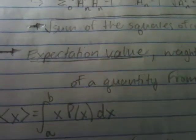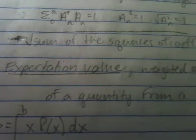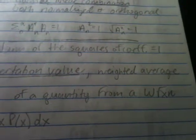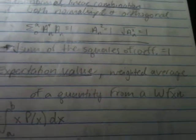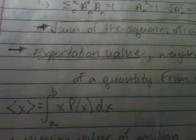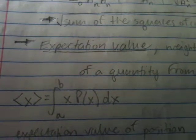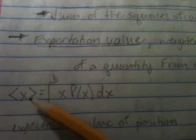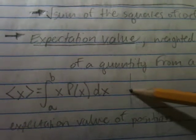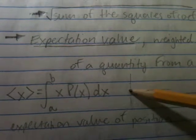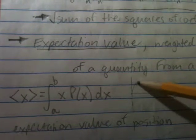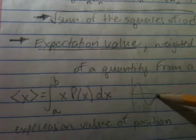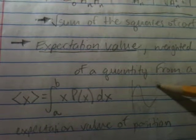And finally on this page, the expectation value is basically a weighted average of a quantity from a wave function. So, for example, let's say we wanted to find where we would expect x. We have p of x. Let's have some sort of function here, p of x.